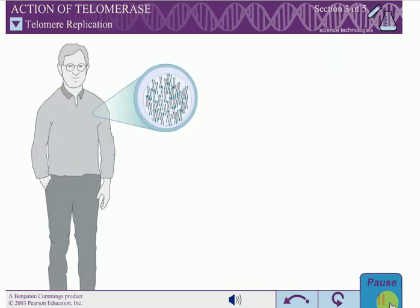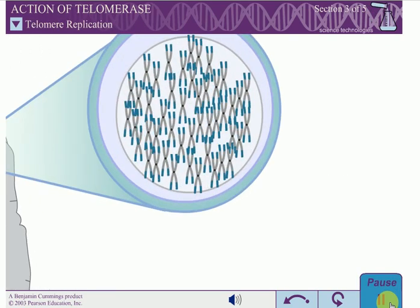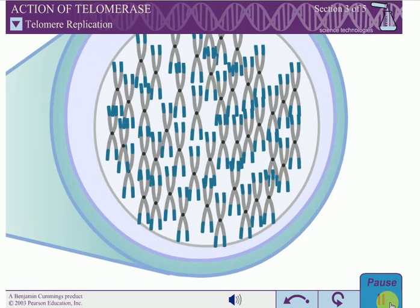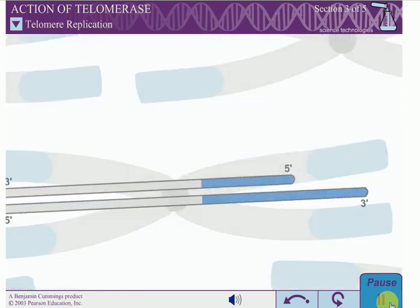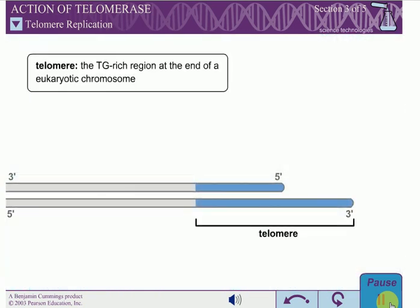The ends of eukaryotic chromosomes are called telomeres, and they are generally composed of repeats of a TG-rich DNA sequence. For example, the sequence TTAGGG is repeated many times in human telomeres. The 3' end of each chromosome extends beyond the 5' end as single-stranded DNA, as would be expected due to the end replication problem.